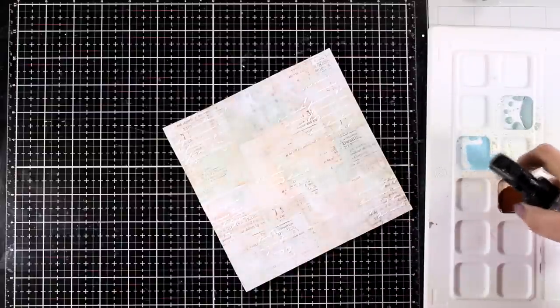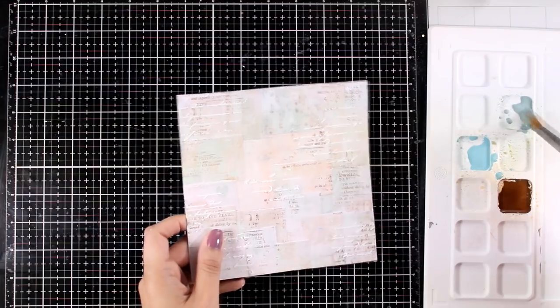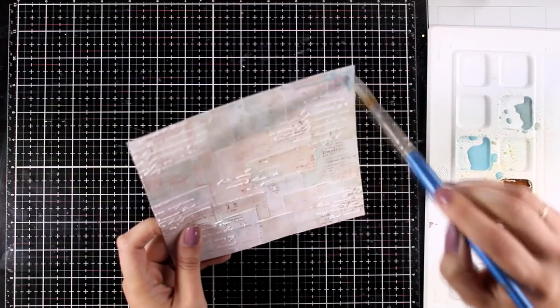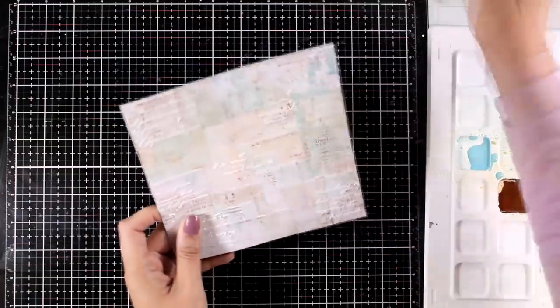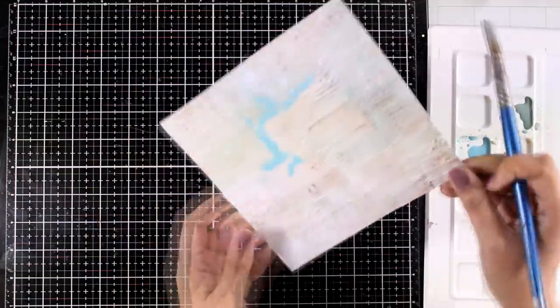Now I don't want to overwhelm my background with color. That's why I added the color with a touch of water on a palette and I'm applying it with a brush. This way I have more control of how much paint I'm adding on my background.